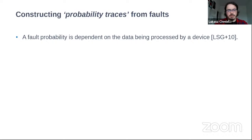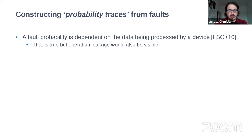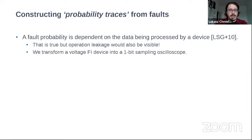The main idea is to construct probability traces from faults. The fact that fault probability is dependent on the data being processed by a device is a well-known fact for more than 10 years — that's also true for the operations and the data being processed. What we do is transform a voltage fault injection device into a one-bit oscilloscope of sorts, and then build these so-called probability traces from that.